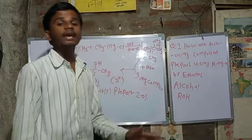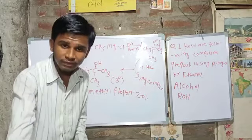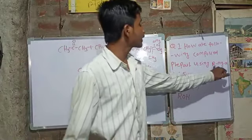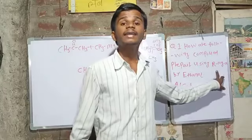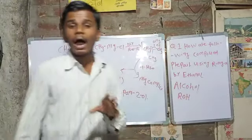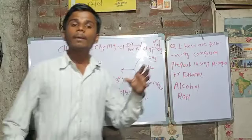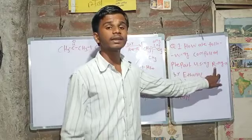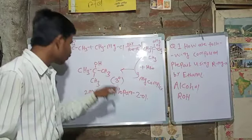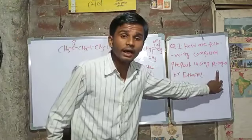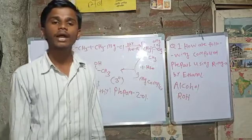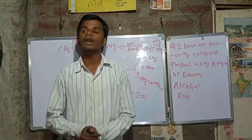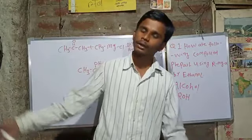Summary: to prepare primary, secondary, and tertiary alcohol using Grignard reagent, the reactants are ketone, aldehyde, and formaldehyde. Formaldehyde plus Grignard reagent gives primary alcohol. RMgX plus ketone gives tertiary alcohol. Grignard reagent plus acetaldehyde gives secondary alcohol. That is how you prepare all three types of alcohol using Grignard reagent. Thank you.